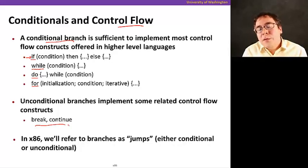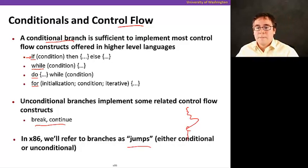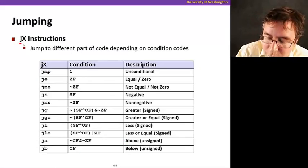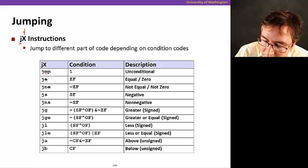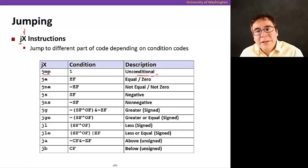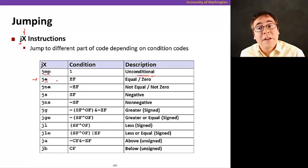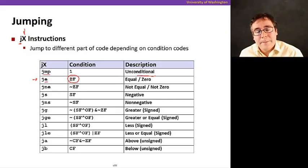In x86, we refer to branches as jumps because it jumps to a different part of your program, either conditional or unconditional. Here are the jump instructions available in x86. They start with the letter j for jump. For example, jmp is an unconditional jump that takes an instruction address as a parameter. je means jump if equal or zero, determined by the condition code register ZF.